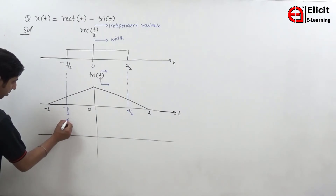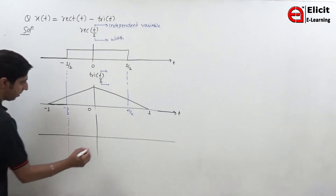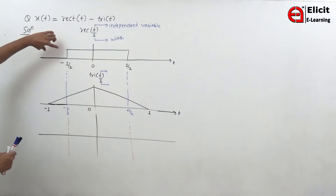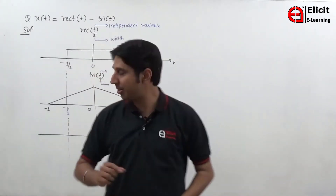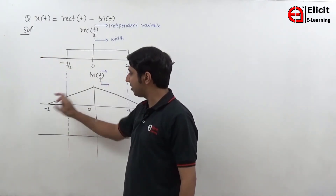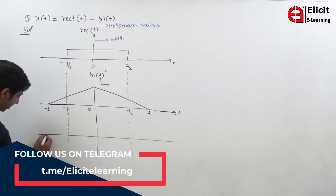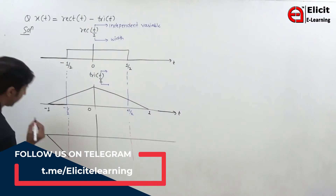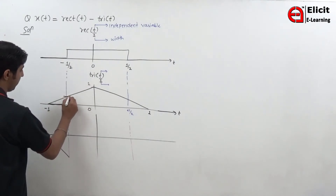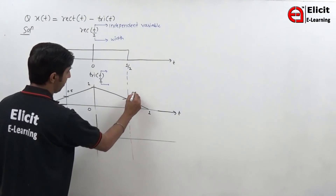This is at minus 1 by 2, and this is at plus 1 by 2. This signal is having value 0. If you observe the first figure, this signal is having value 0, and now I am going to subtract this signal. So the signal will draw like this — this is minus 1. So if this is 1, this value is 0.5, exactly half. And this value will be exactly half, 0.5.